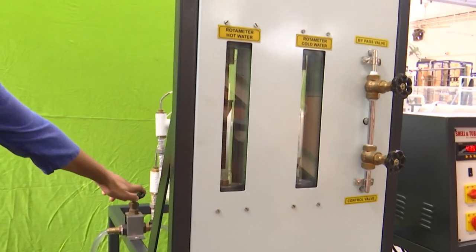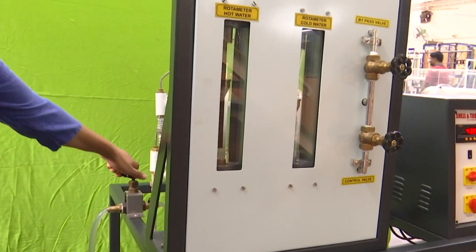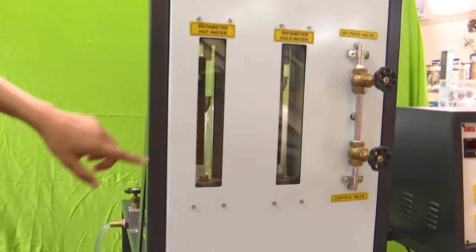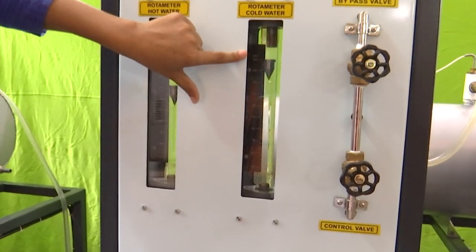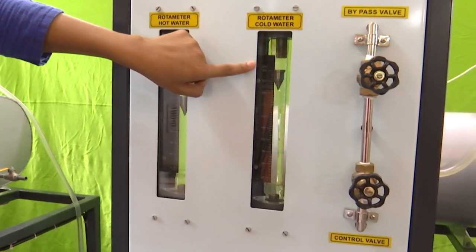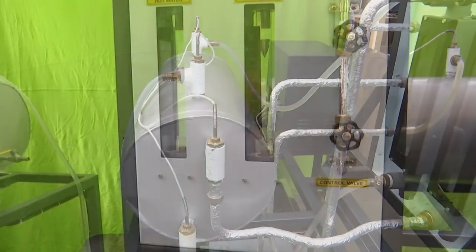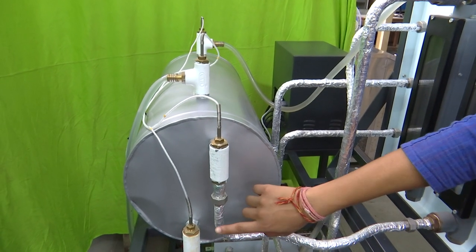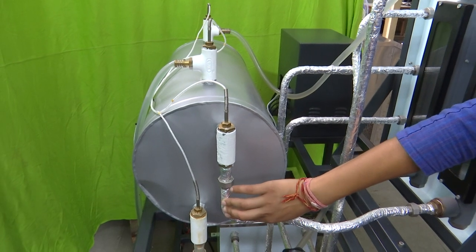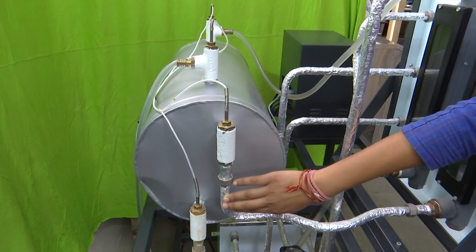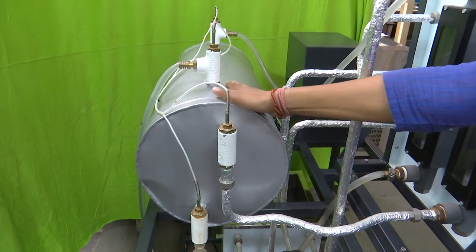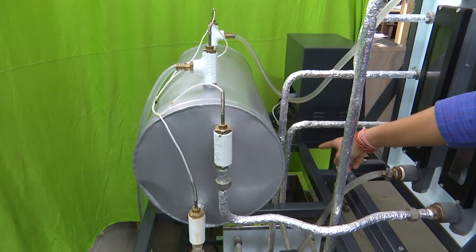This is the valve for adjusting the cold fluid flow rate. As we can see we opened the valve and the flow rate has increased. These are the shell and tube heat exchanger, so these are the inlets and outlets for tube side, and these are the inlets and outlets for the shell side on the top.